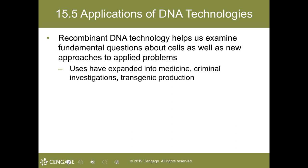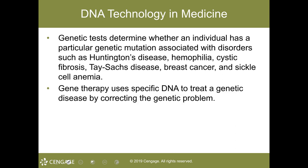Now to applications of DNA technology. Recombinant DNA technology has helped us examine fundamental questions about cells and apply them to practical problems, from medicine to criminal investigation and transgenic organism production. DNA technology in medicine is used to identify genetic mutation-associated disorders such as cystic fibrosis, Tay-Sachs disease, sickle cell anemia, Huntington's disease, and even breast cancer. Gene therapy uses specific DNA to treat a genetic disease by correcting that problem.